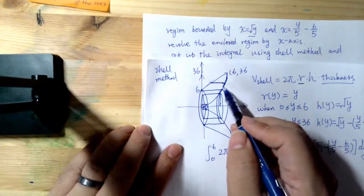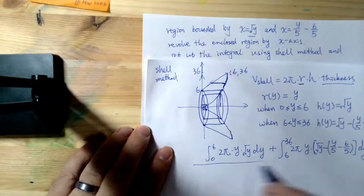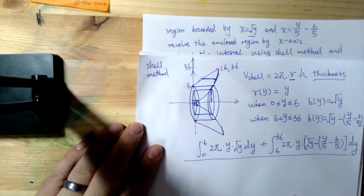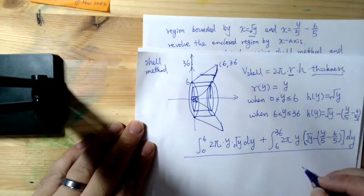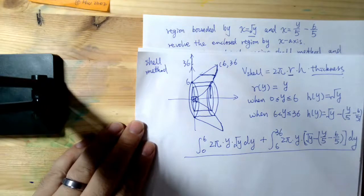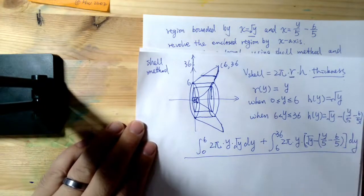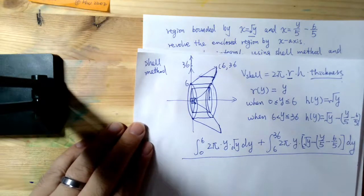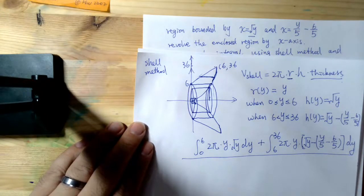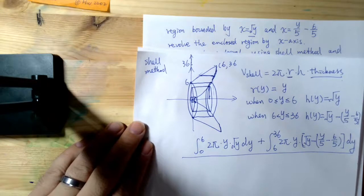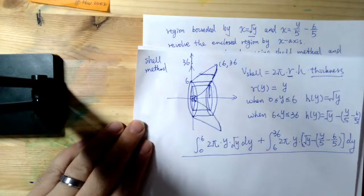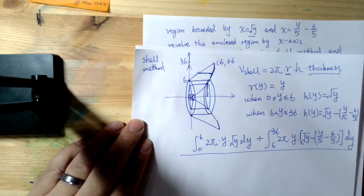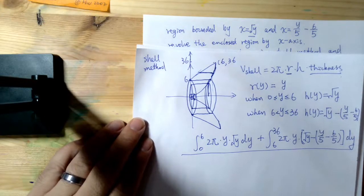For this problem, the washer method is much easier than the shell method. But for some problems it could be the reverse — the shell method might be easier and the washer method harder to construct. With enough practice, you'll develop a sense for which method is easier to set up.